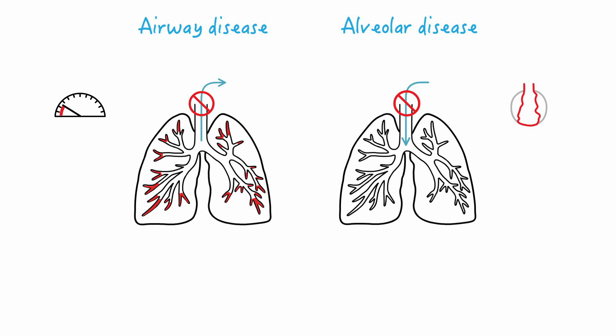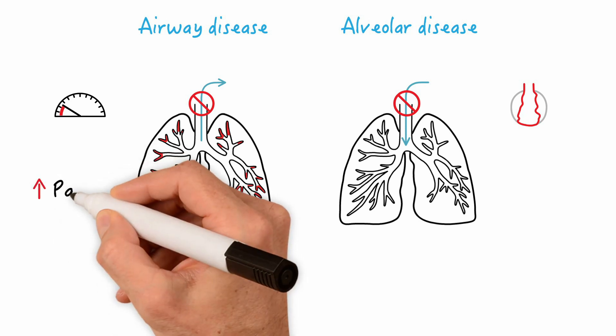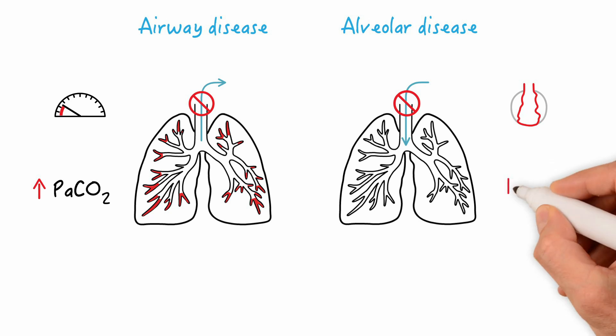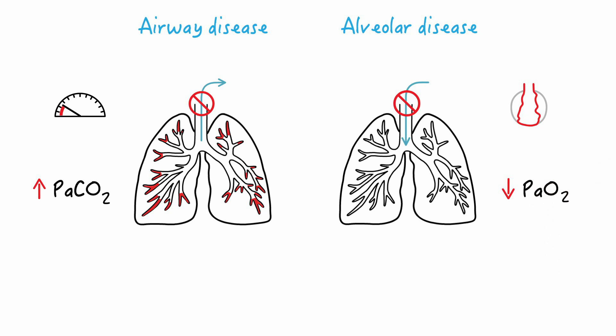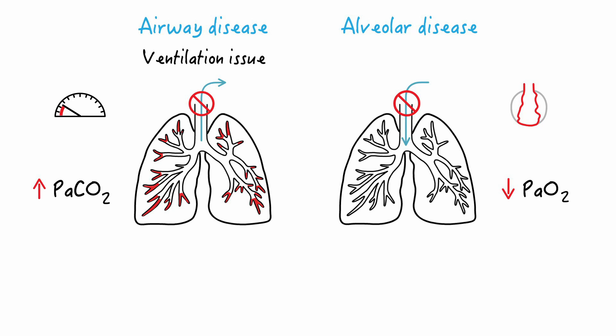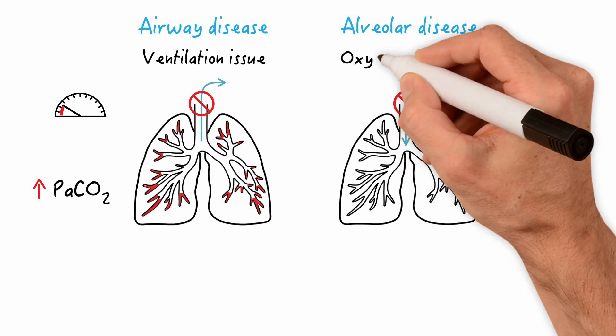In airway disease, because the patient will have difficulty getting volume out, this will lead to increased PaCO2 levels since CO2 is not being properly ventilated out. In alveolar disease, because the patient suffers from alveolar damage, this will lead to decreased PAO2 levels. In airway disease, because the patient is not ventilating CO2 out, this disease category is said to have a ventilation issue. But in alveolar disease, because oxygen cannot enter the collapsed alveoli, this disease category is said to have an oxygenation issue.